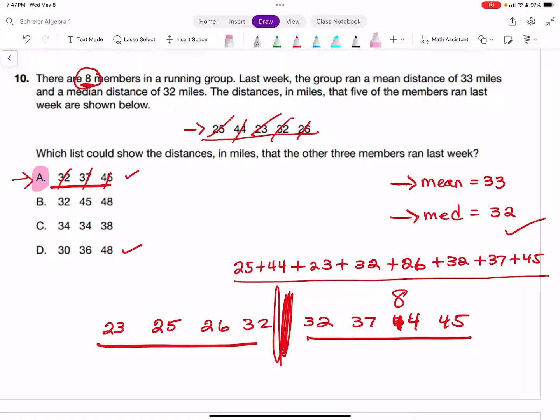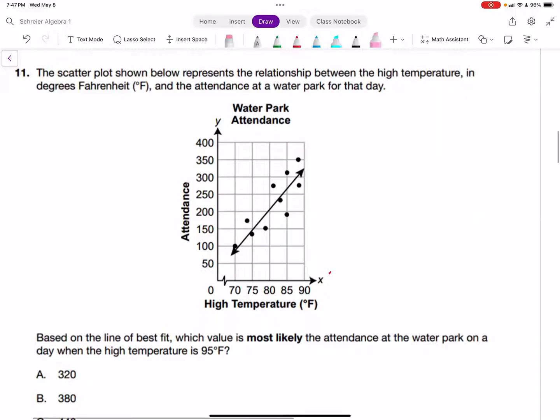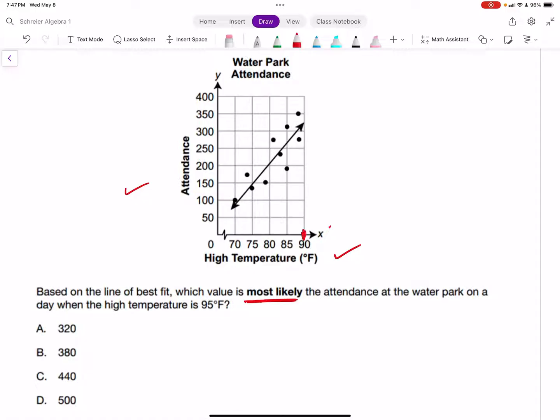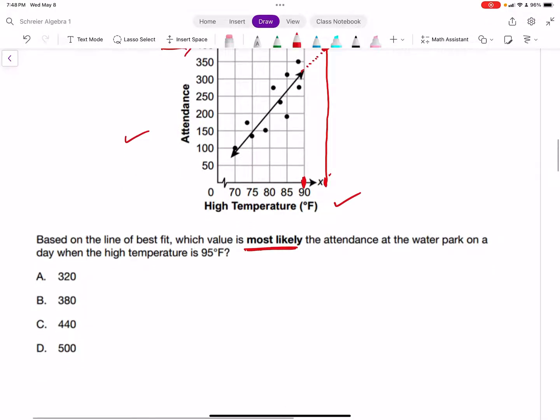Problem 11. We have a scatter plot showing the relationship between high temperature in degrees Fahrenheit (x-axis) and attendance at a water park. Based on the line of best fit, which value most likely is the attendance when the high temperature is 95 degrees? The end of our graph is at 90 degrees. If we extrapolate, 95 degrees takes us just under 400,000 people, which is answer B.